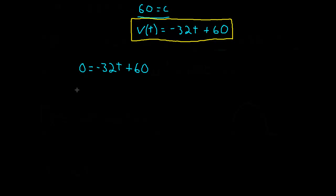Okay, so subtract 60 to the other side. We get negative 60 equals negative 32t. Now, if we divide both sides by negative 32, we should get 1.875 seconds. 1.875 seconds. That makes sense. It's almost 2 seconds.